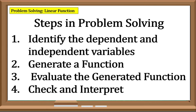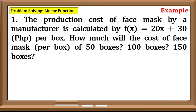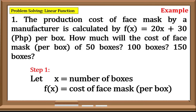Now let us have an example. The production cost of face mask by a manufacturer is calculated by f(x) = 20x + 30 per box. The question is: how much will the cost of face mask per box for 50 boxes, 100 boxes, and 150 boxes? Step 1: Identify the dependent and independent variables. Our unknowns are the number of boxes for the dependent variable and the cost of face mask per box for our independent variable.